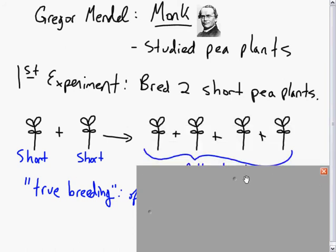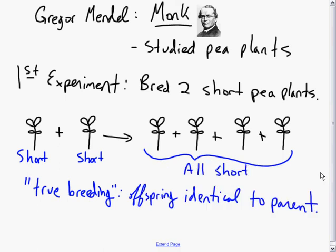He noticed that all of the offspring were also short. He took short parents and got short offspring—not too stunning a result. He called these short pea plants true breeding, in which the offspring were identical to the parent.